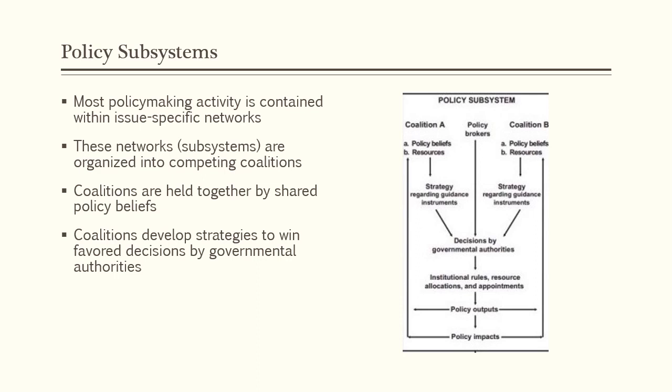So looking at policy subsystems more closely, the term policy subsystem gets at the idea that the policy process is not very centralized among a few key decision makers on every issue, but instead is distributed among different networks of policy actors who are active on different issues. Unlike the Schoolhouse Rock version of policymaking, in which every policy idea gets processed through the same group of decision makers in Congress, policymaking is actually much more fragmented. Each policy issue is considered as its own mini policymaking system, or subsystem.